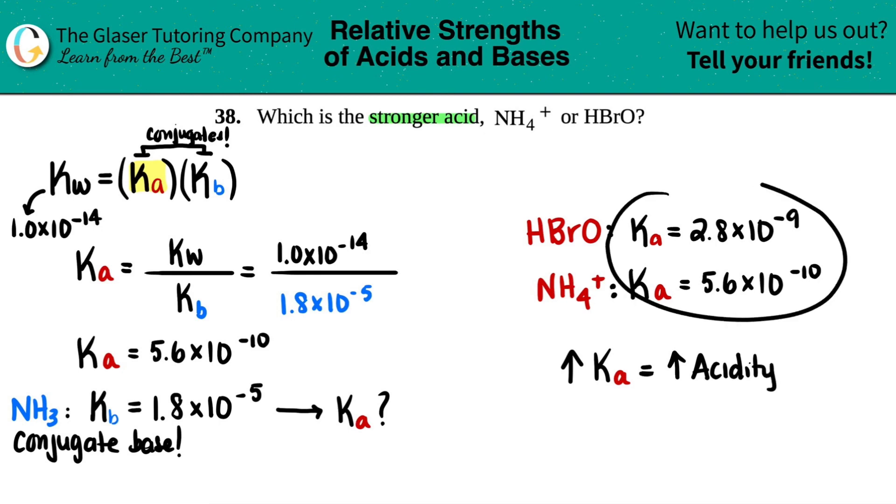So all we got to do is just compare these Ka values. 2.8 times 10 to the negative 9th versus 5.6 times 10 to the negative 10th. This is a bigger value, right? This Ka value is bigger. So that means that HBrO is the stronger acid. And that's it. That's the answer.